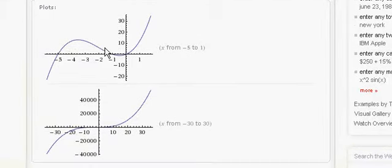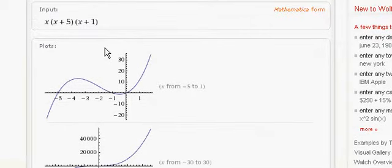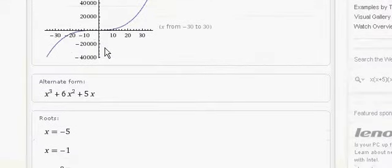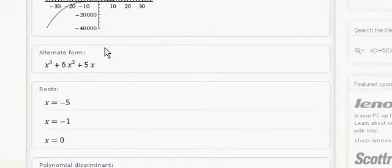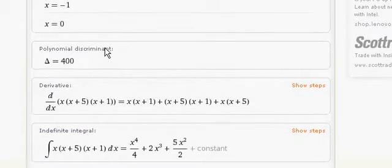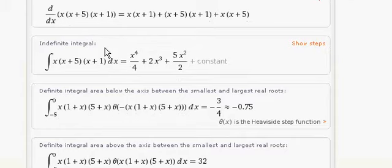So, that's some of the magic that's hidden behind x times x plus 5 times x plus 1. There's the alternate form, the roots, and here are the polynomial discriminants, the derivatives, indefinite integrals, definite integrals, and the definite integrals again.